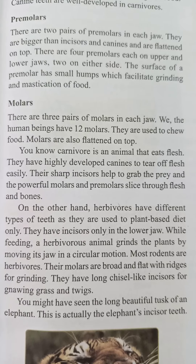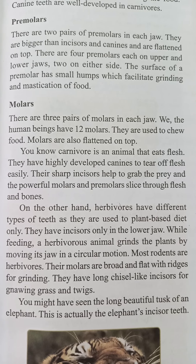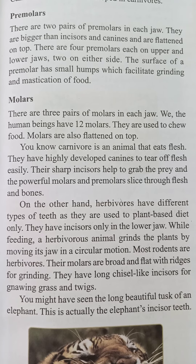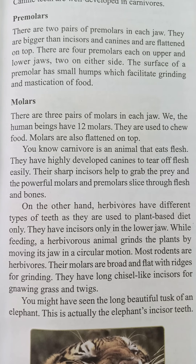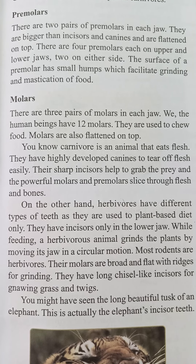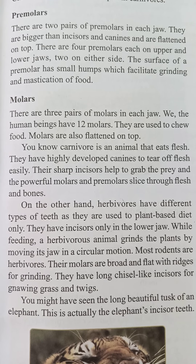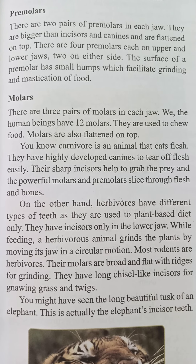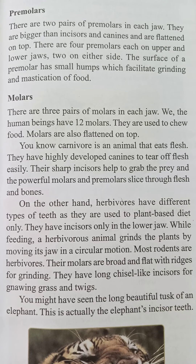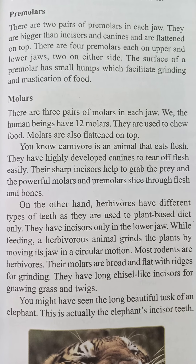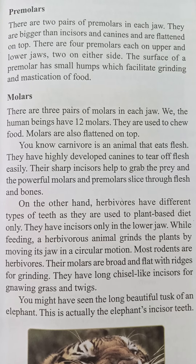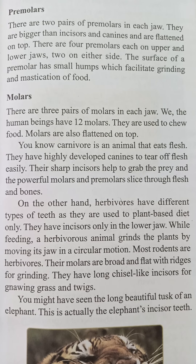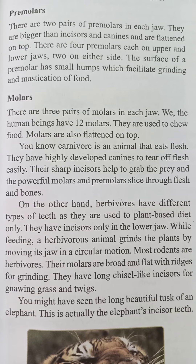Molars: there are three pairs of molars in each jaw. We human beings have 12 molars in total. They are used to chew food, and molars are also flattened on top.